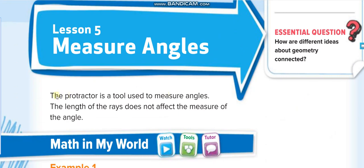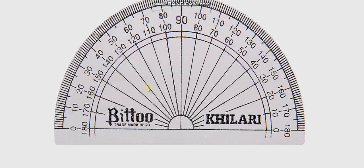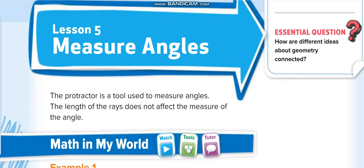The protractor is a tool I showed you in the last lesson. It's a half circle, and we have measurements from 0 to 180 degrees. This is the tool with which we measure angles.